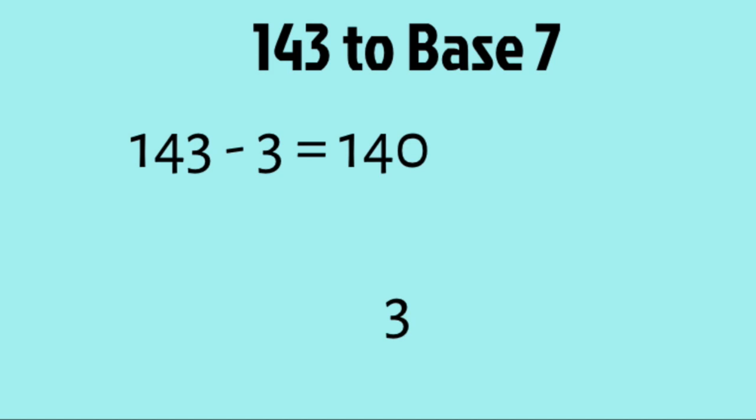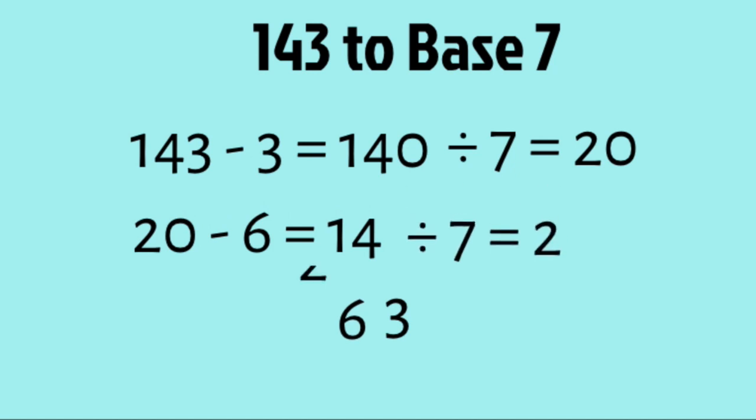With our number 140, we then divide by the base, which is 7, to get 20. With this number, we then repeat the process. We subtract by 6 to get 14, we add the 6 to the end of our number, and then we divide by 7 to get 2, and since this value is less than 7, we just add it to the beginning of our number.